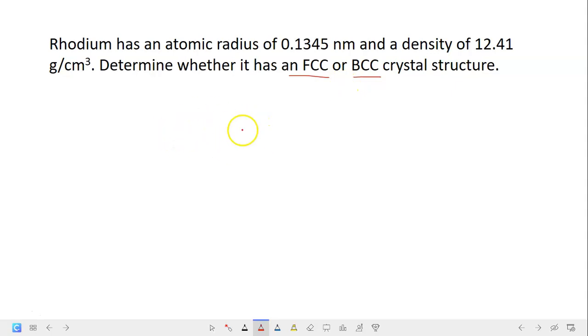Actually, we need to do something like trial and error. We can compute the density of rhodium using the formula for density. If we assume a unit cell is BCC, we need to use all the properties of BCC in the calculation. If the answer matches 12.41 gram per cm³, then the unit cell is BCC.